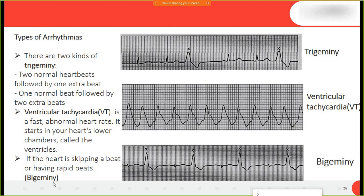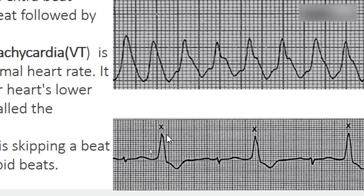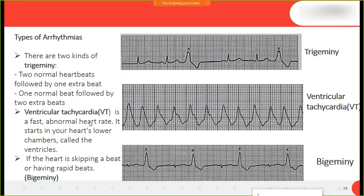Another type is bigeminy. As mentioned, it involves skipping or extra beats. In the graph you can see the normal heartbeat, but these abnormal ones are higher. So there are three kinds of arrhythmia we are going to predict.